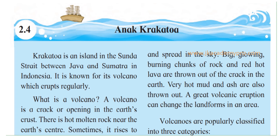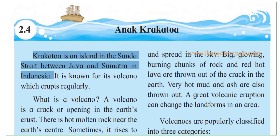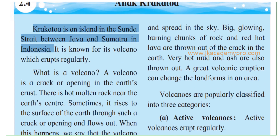Anak Krakatoa. Krakatoa is an island in the Sunda Strait between Java and Sumatra in Indonesia. So, Krakatoa is the name of an island. Where is this island? In the Sunda Strait. What is a strait? A strait is a passage of water, or part of water, which connects two bigger water bodies — it could be seas, it could be oceans. The Sunda Strait is between the islands of Java and Sumatra, and this is in Indonesia, which is a country.